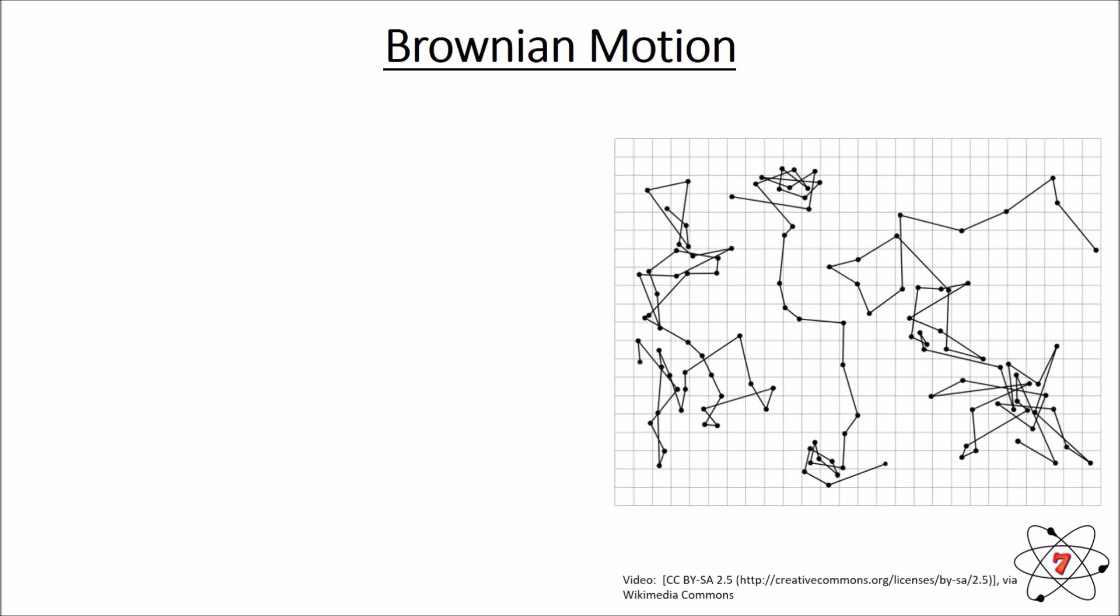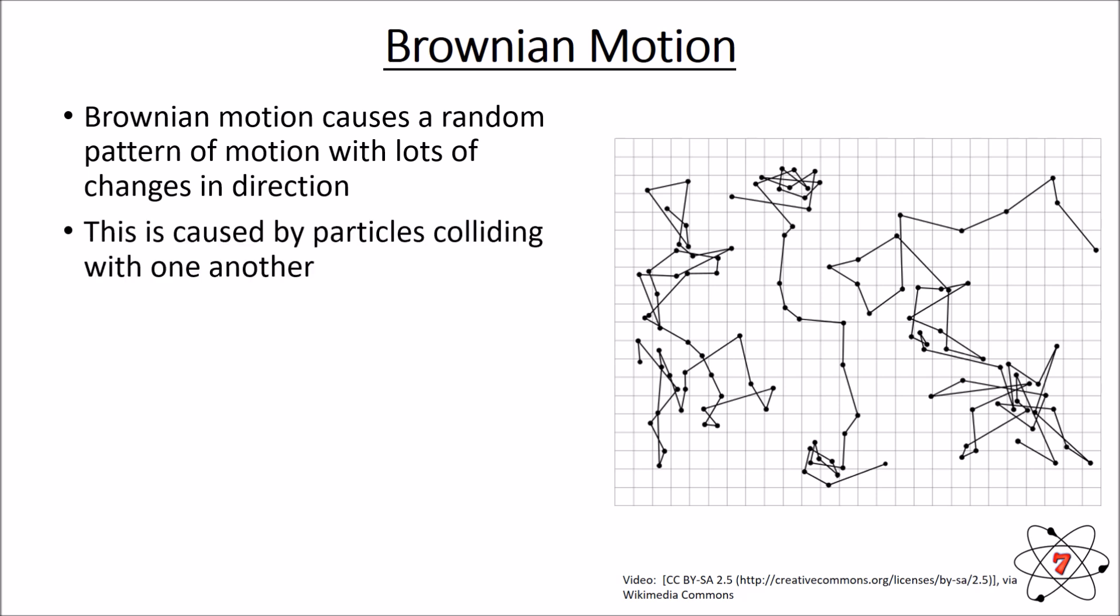We can see there's an image here showing example paths of how a particle might move due to Brownian motion. So Brownian motion causes a random pattern of motion with lots of changes of direction to individual particles. And it's caused by particles colliding with one another.